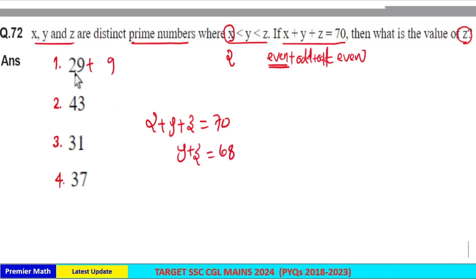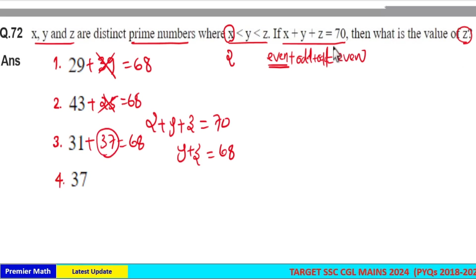If you check the options: 29 plus 39 is 68, but 39 is not a prime number. 43 plus 25 is 68, but 25 is not a prime number. 31 plus 37 is 68, and here 37 is the largest.